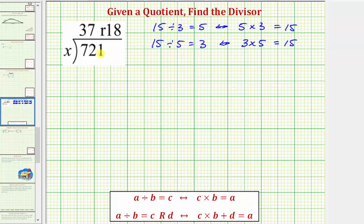So looking at our quotient, we have 721 divided by x equals 37 with the remainder of 18. Which tells us that 37 times the divisor x plus the remainder 18 must equal 721.